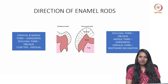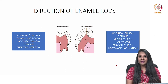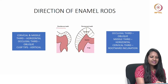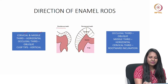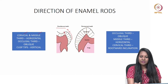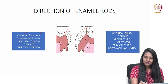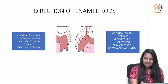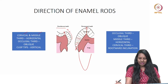Moving to the direction of enamel rods in deciduous and permanent teeth. In deciduous teeth, in the cervical and middle third, rods are horizontal, oblique in the occlusal third, and almost vertical at the cusp tips. In permanent teeth, at the cusp tip it is again vertical, in the middle third it is horizontal, and in the cervical area the rods incline towards the root.